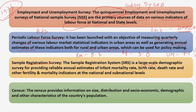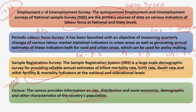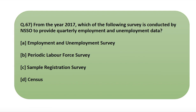The Sample Registration Survey is a large-scale demographic survey providing reliable annual estimates for infant mortality, birth rate, death rate, and other fertility and mortality indicators. The Census is held every 10 years and provides information on size, distribution, socioeconomic, demographic, and other characteristics of the population. In summary, EUS was held every five years, but PLFS was launched in 2017 with changes in methodology and generates both quarterly and annual estimates. The answer to this question is Periodic Labor Force Survey.